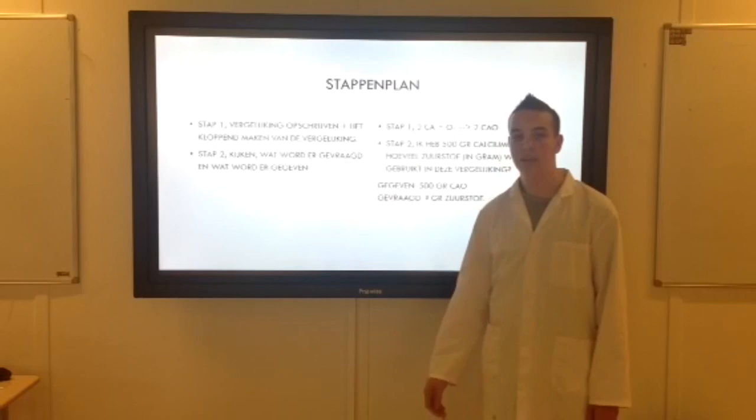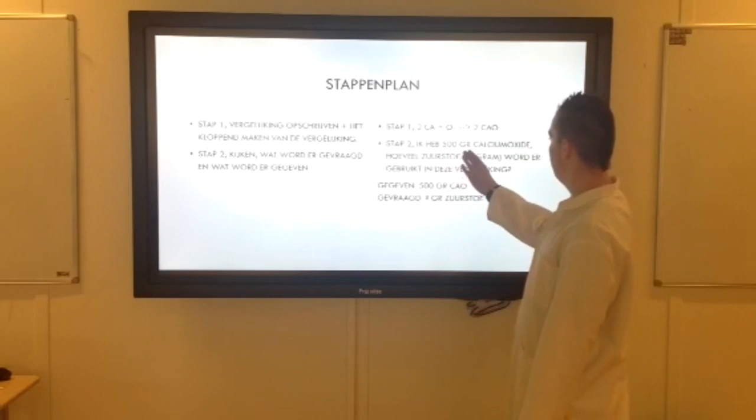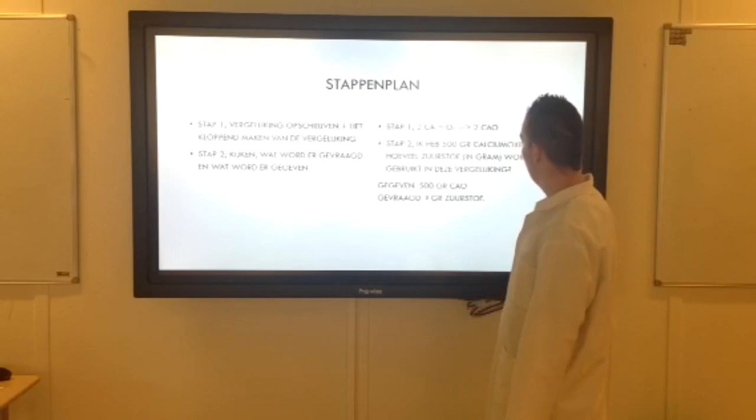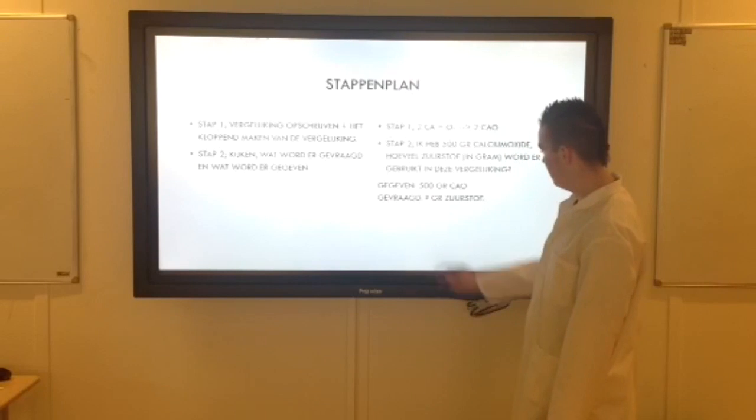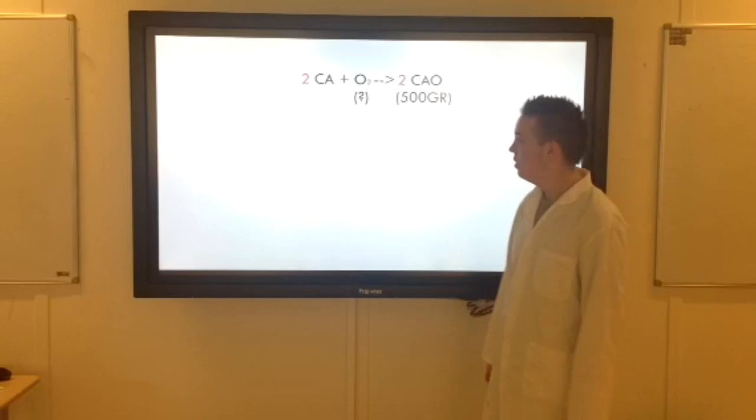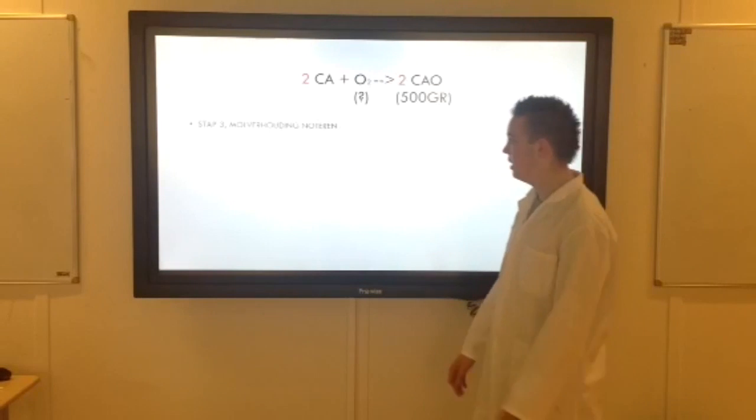Dan gaan we kijken wat is er gegeven en wat wordt er gevraagd. We hebben 500 gram calciumoxide. Dus dat is gegeven. We willen weten hoeveel zuurstof er wordt gegeven. Daar heb je een vraagteken bij gezet. Die weten we nog niet. Dan gaan we naar stap 3. En dan gaan we een molverhouding noteren. Dat klinkt veel moeilijker dan het is.